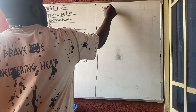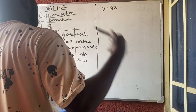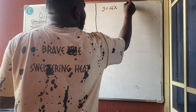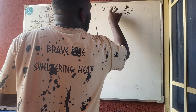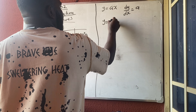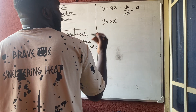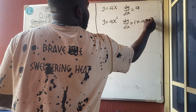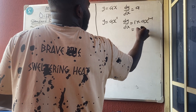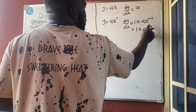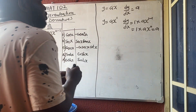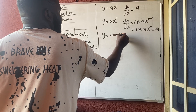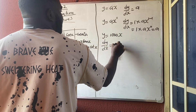Rule 2: if y = ax — no power on x — then dy/dx is simply the coefficient a. We can verify this: ax = ax^1, so multiplying by the power gives 1·a, and removing one from the power gives x^0 = 1, so dy/dx = a.